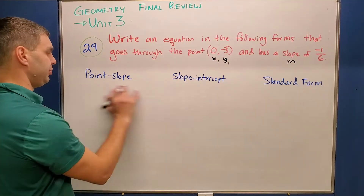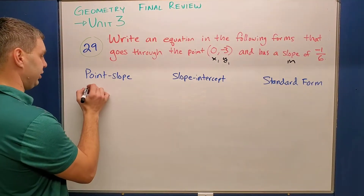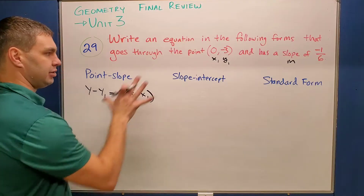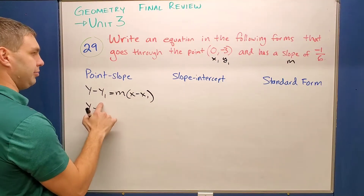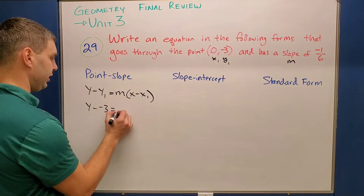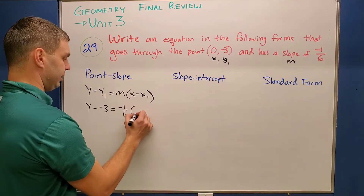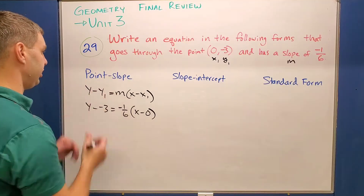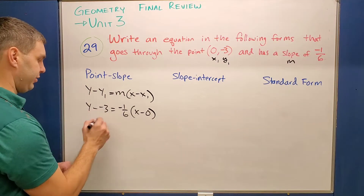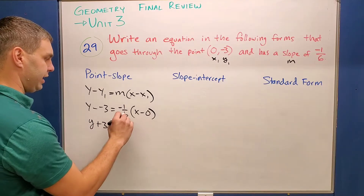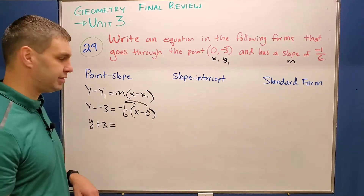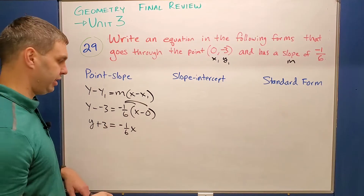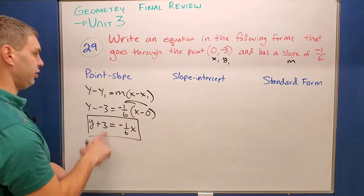Point-slope form looks like: y minus y1 equals the slope times (x minus x1). Plugging in our values: y minus (-3) equals negative 1/6 times (x minus 0). Simplifying, y minus a negative 3 becomes y plus 3, and distributing negative 1/6 into the parentheses gives negative 1/6 times x. Since negative 1/6 times 0 is nothing, the point-slope form is y plus 3 equals negative 1/6 x.